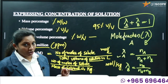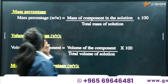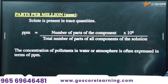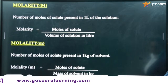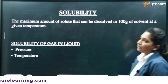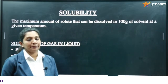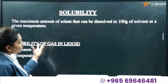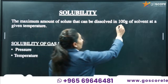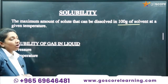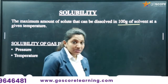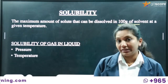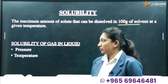Now let us move on to solubility. Solubility is the maximum amount of solute that can be dissolved in 100 grams of a solvent at a particular temperature. The solubility of a gas in a liquid depends on pressure and temperature. The effect of pressure on the solubility of gas in liquid is expressed by Henry's law. According to Henry's law, the solubility of gas is directly proportional to pressure — more pressure means more gas dissolved; less pressure means less solubility.